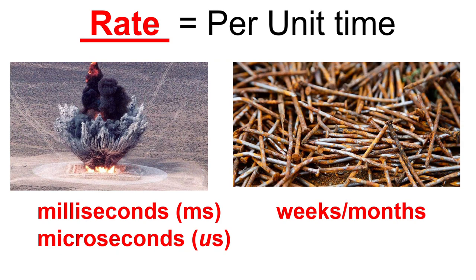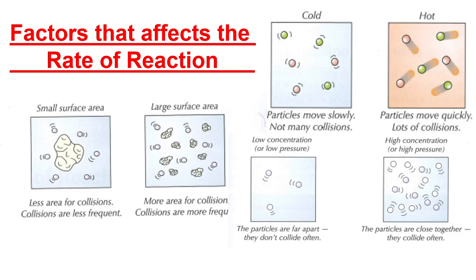So what does rate mean? Rate is how fast something happens, and the key phrase is 'per unit time.' For example, an appropriate unit of time for an explosion would be milliseconds or even microseconds — that's a millionth of a second — whereas an appropriate unit of time for rusting would be weeks or months. It all depends on what you are studying.